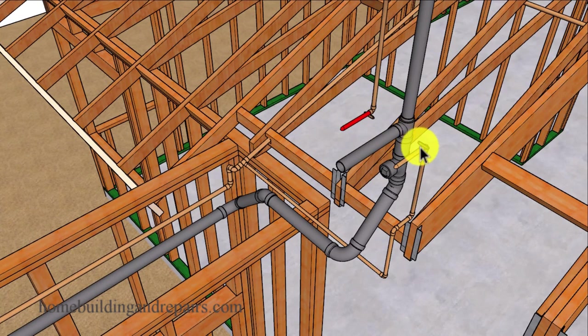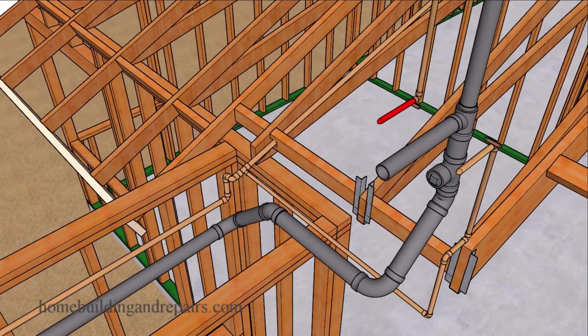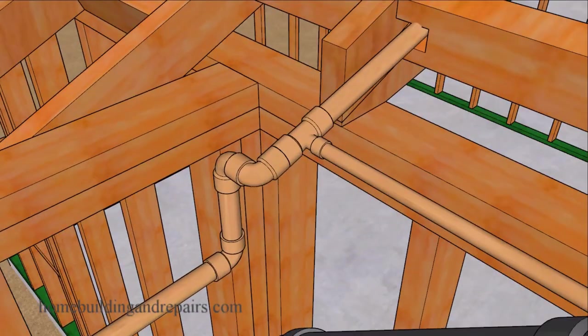For our cold water we are going to come off of this line here with a half inch line to feed the sink and then overhead for the hot water. In this example I'm going to have the cold water feed through the attic because I won't be able to drill through the doubler at the stair head out.